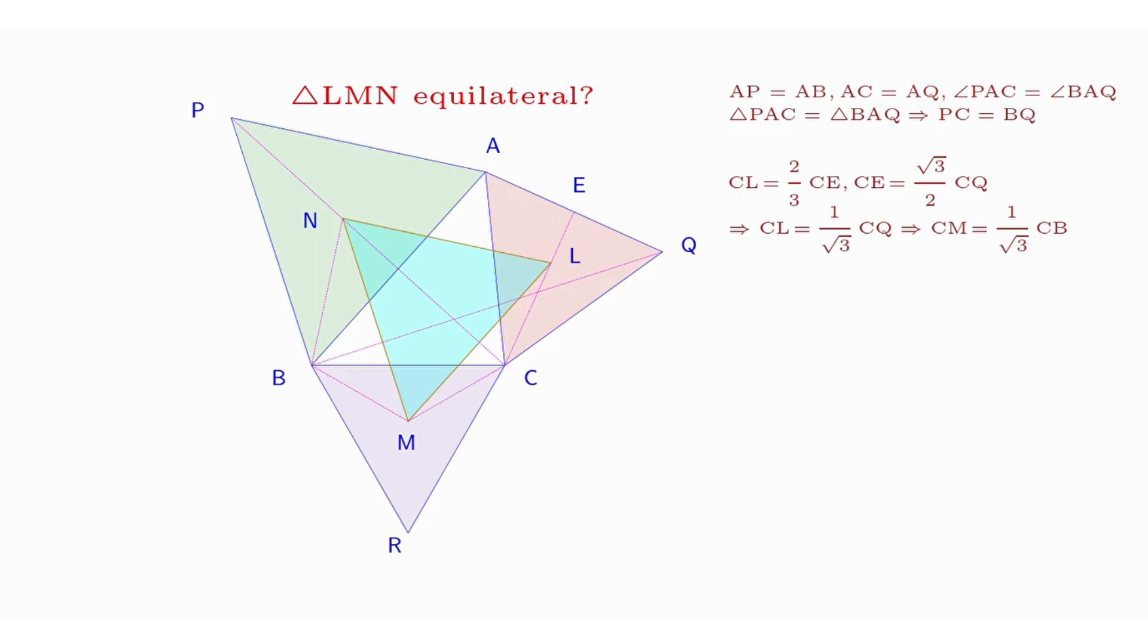As L is the center of the equilateral triangle ACQ, CL equals two-thirds of CE, and CE equals one-half of √3 times CQ due to the fact that triangle CEQ is right-angled at E and angle ECQ equals 30 degrees. Therefore, CL equals CQ divided by √3.